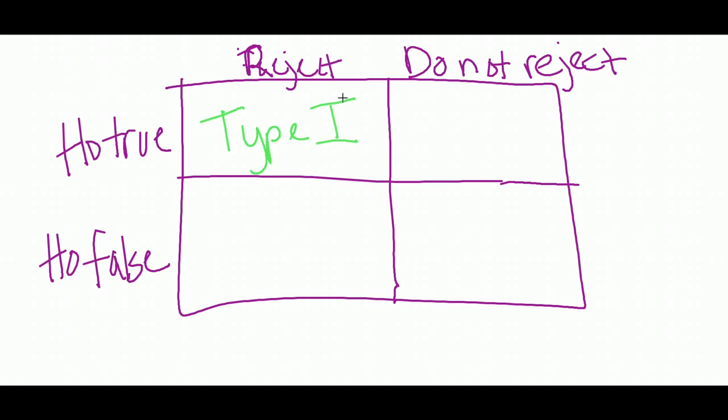Okay, so what happens when you have a true null, meaning there is no effect, and you don't reject that null. You say, you know, I'm not gonna reject that. What is that? It's a correct decision.